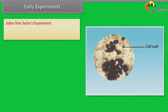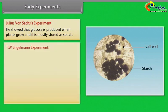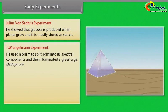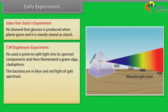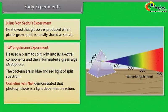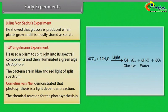Julius von Sachs showed that glucose is produced when plants grow and is mostly stored as starch. T.W. Engelman used a prism to split light into spectral components and illuminated a green alga, Cladophora. Bacteria accumulated in blue and red light of the split spectrum. Cornelius Van Neel demonstrated that photosynthesis is a light-dependent reaction. The chemical equation for photosynthesis is: 6CO2 + 12H2O in presence of light gives C6H12O6 (glucose) + 6H2O + 6O2.